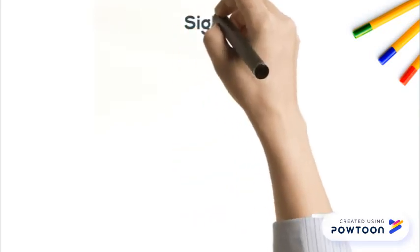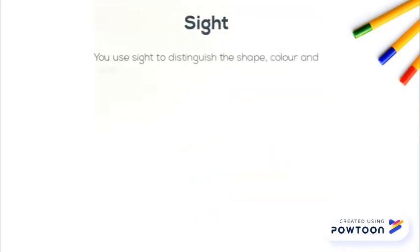Sight. You use your sight to distinguish the shape, color, and size of objects. You can only see if there is light.